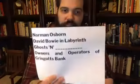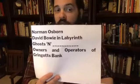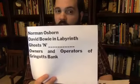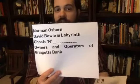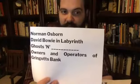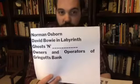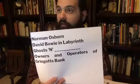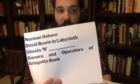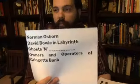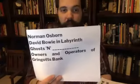Next: Norman Osborn, David Bowie in Labyrinth, Ghosts and Blank, and owners and operators of Gringotts Bank. These are all goblins. Norman Osborn is the Green Goblin in Spider-Man. David Bowie in Labyrinth is the Goblin King. The classic video game Ghosts and Goblins, which is essentially impossible. And the owners and operators of Gringotts Bank are, of course, goblins in Harry Potter.